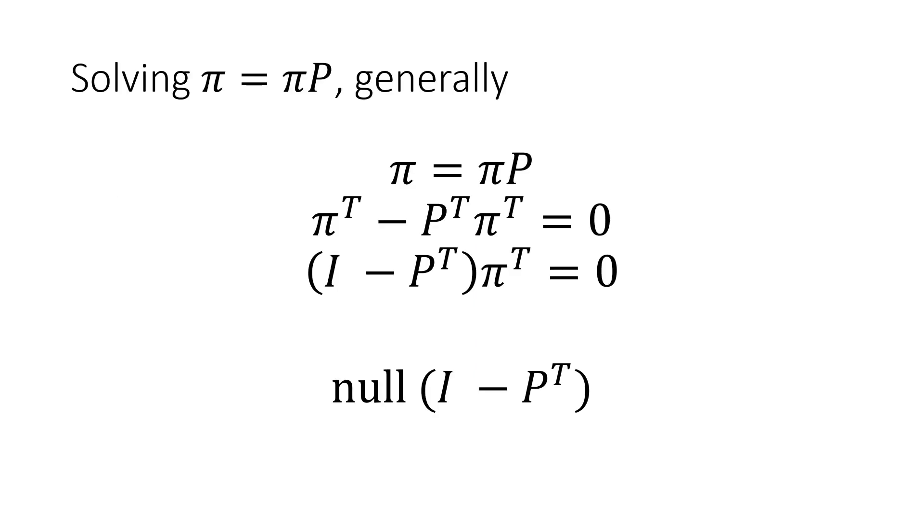Now we simply need to solve the actual equation π = πP. This is simply some elementary algebra and a little linear algebra. We take the transpose of the entire equation and then subtract over the P transpose π transpose term. After that, we can factor out the π transpose and then realize that π transpose will be the null space of I minus P transpose as it is the solution to the equation Ax = 0 for matrix A equal to I minus P transpose.